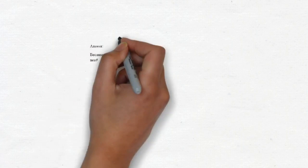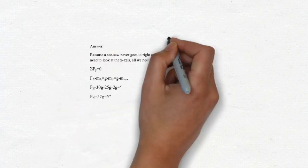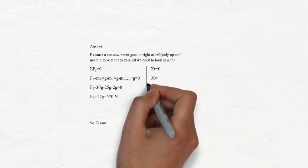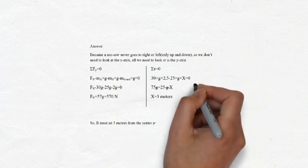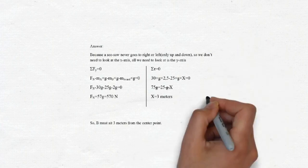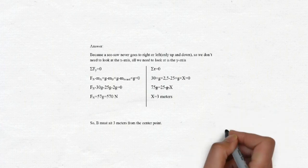The answer is because a seesaw never goes to right or left, only up and down. So, we don't need to look at the x-axis. All we need to do is look at the y-axis. And we can find that x is 3 meters. So, B must sit 3 meters from the center point.